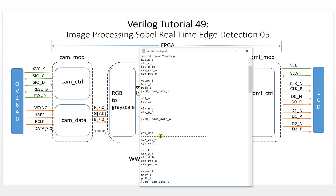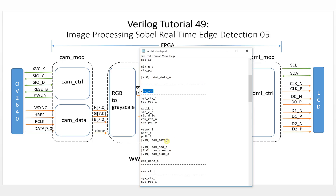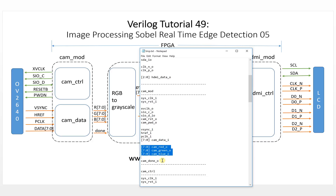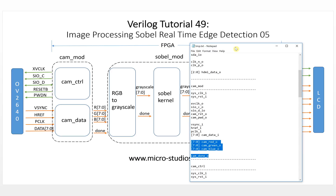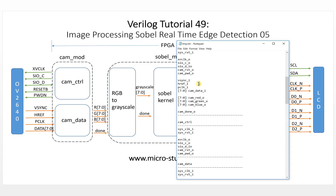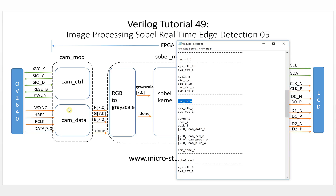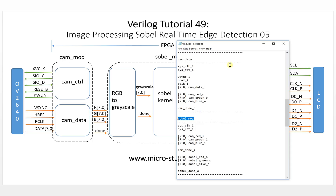This is the top module. This is the camera module — from here to here is shared with the FPGA top. From here to here is the output of the camera module: camera red output, camera green output, camera blue output, and camera done — all 8-bit, from 7 to 0. Make a list of all the modules. This is for camera raw, this is for the camera model, and this is for the SOBO body.